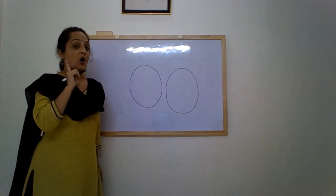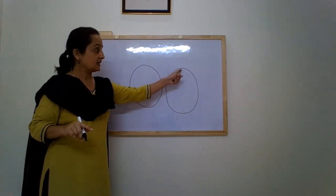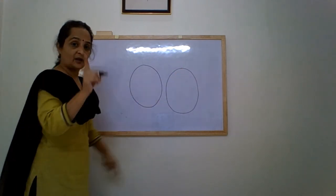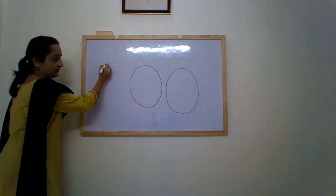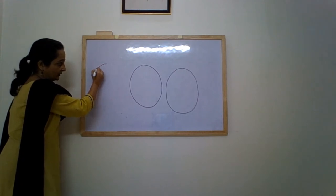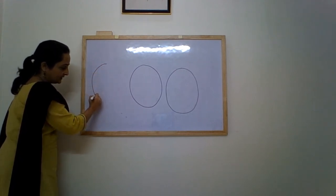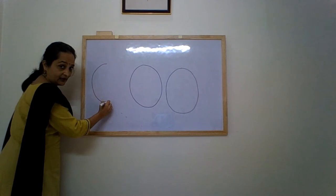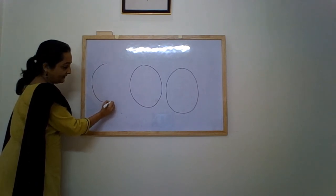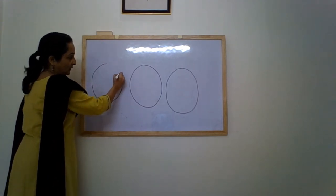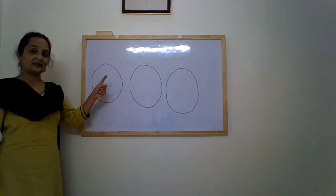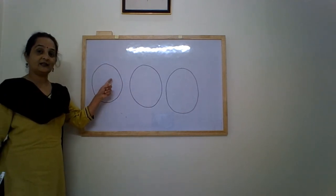All right, children. Always remember, start from up. One more time — we start from here, we go down making a C. Doesn't this look like a C? And then again we will go up and join here. This is letter O.